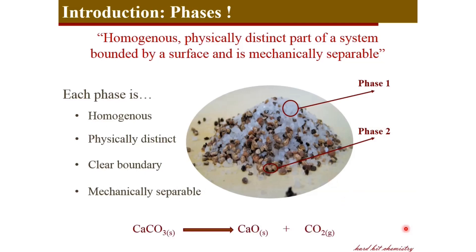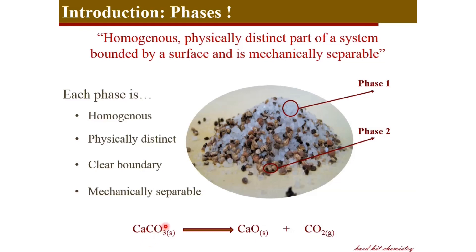Consider a reaction vessel having calcium carbonate undergoing thermal degradation. The solid calcium carbonate degrades to give solid calcium oxide and gaseous carbon dioxide. This system constitutes three phases: solid calcium carbonate, solid calcium oxide, and the gaseous carbon dioxide phase.